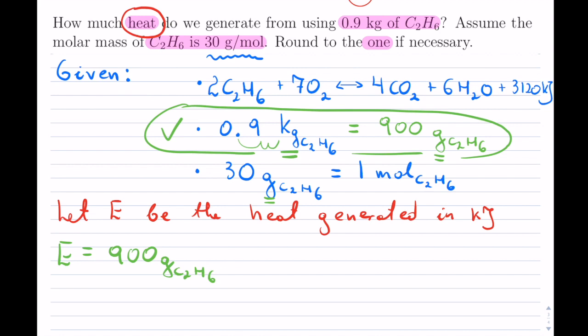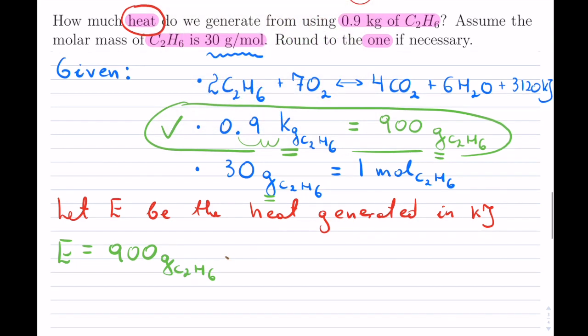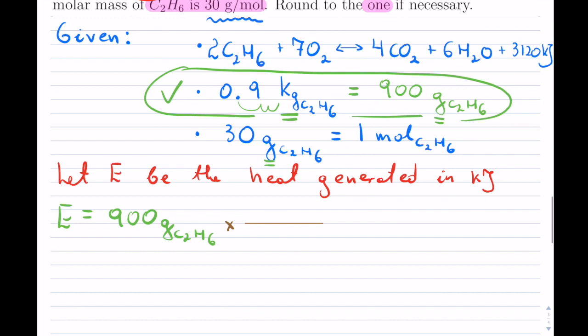So I have 900 grams of C2H6 that I'm going to begin with. Now, I don't want to have, obviously, grams of C2H6. So I want to cancel this off.